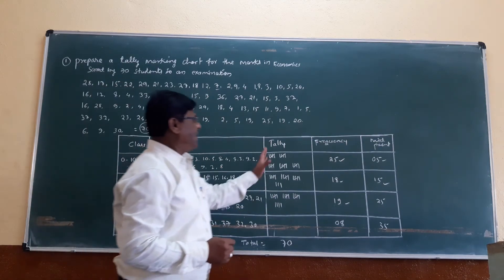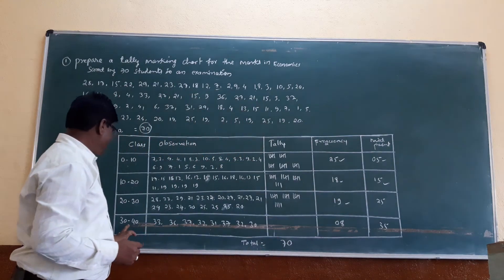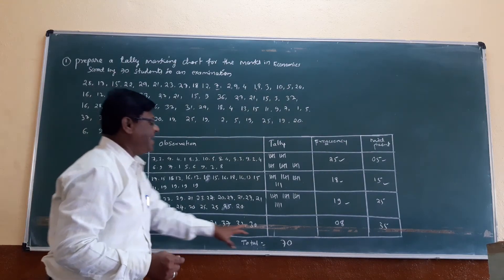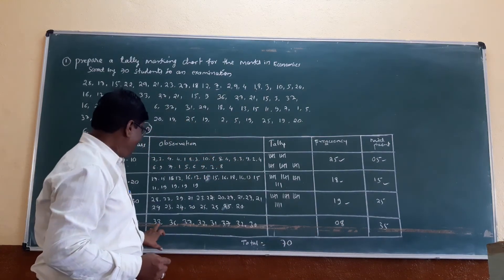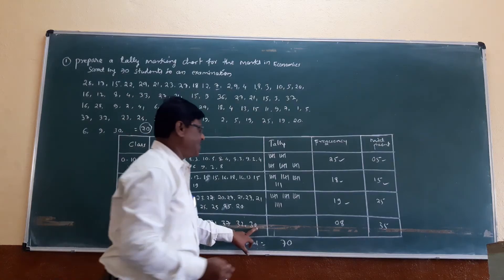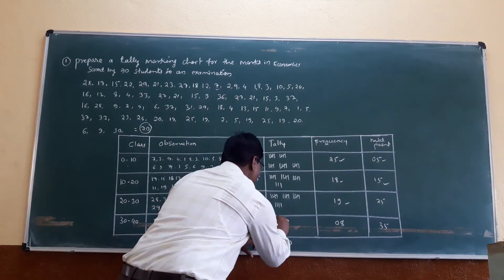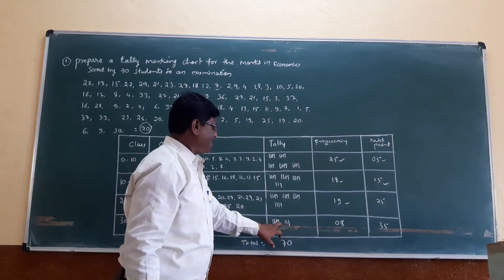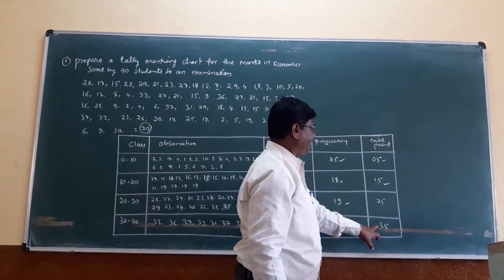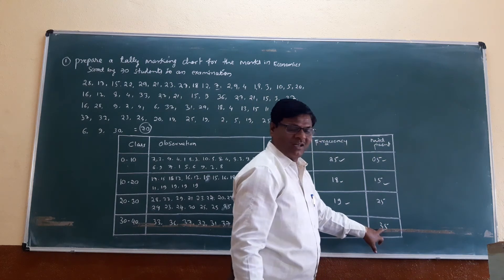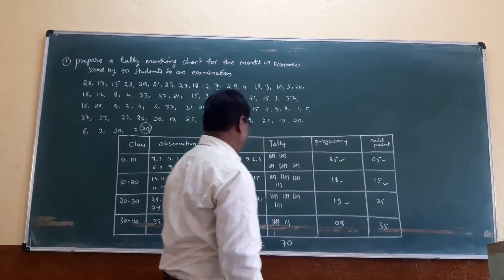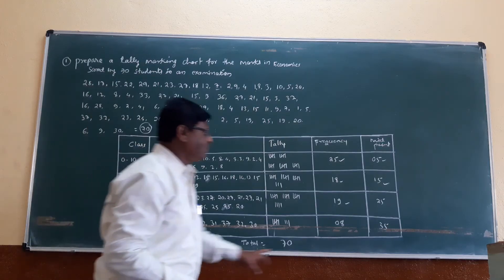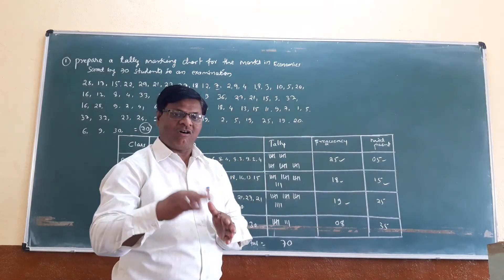The last class is 30 to 40. The frequency is 8. Tally: 5, then 3 more — 5 plus 3 equals 8. The midpoint is 35, calculated as 30 plus 40 equals 70, divided by 2 equals 35. Or 35 is half of 70.